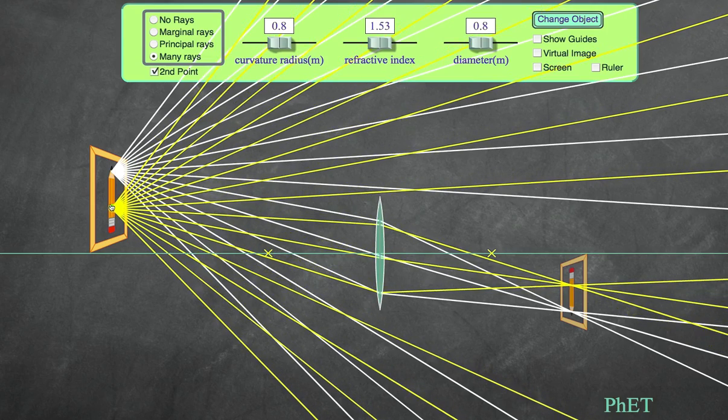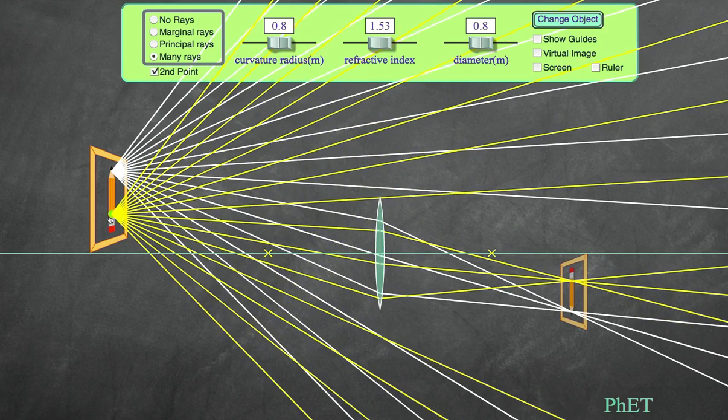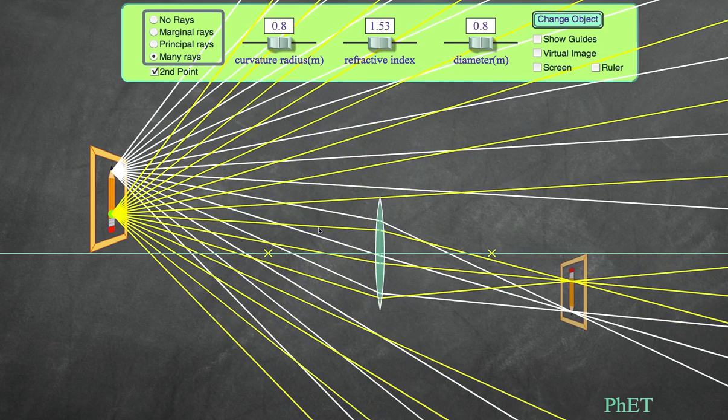If I were to move this particular point, you can see I would get different effects. I would eventually get the whole pencil in view because the light is converging to a point. All these points are converging at a common point, and that's what you would see and where you would get a sharp image.